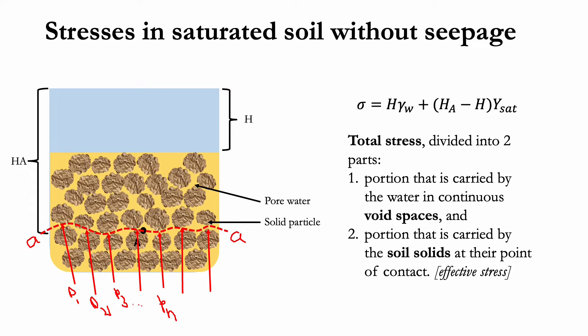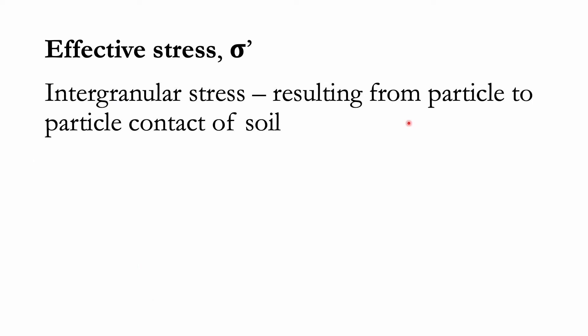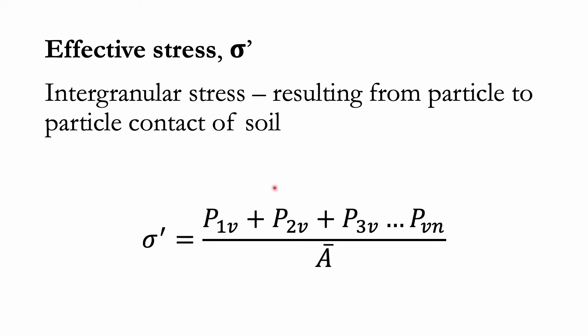The sum of the vertical components of the forces developed at the points of contact of the solid particles per unit cross-sectional area of the soil mass is called the effective stress — or, as some authors would like to call it, intergranular stress — which results from particle to particle contact of the soil. We express that in this equation.